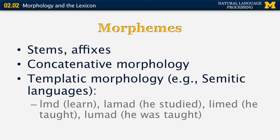The morphemes of a word are individual units of morphological meaning. They include the stems and the affixes of the word. Affixes are prefixes, suffixes, and endings. There are some languages that have concatenative morphology, like English, where the affixes are added to the beginning or end of the word. But there are also cases of templatic morphology.